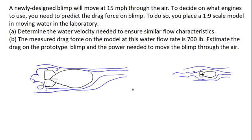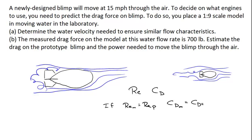If you do the dimensional analysis on this problem, you'll find that there are only two pi terms: the Reynolds number and the coefficient of drag. So if the Reynolds number for the model equals the Reynolds number of the prototype, then the coefficient of drag for the model equals the coefficient of drag for the prototype. Even though the full scale blimp is in air and the model is nine times smaller and flowing through water, if we match the Reynolds numbers, the flow characteristics around these blimps will be exactly the same.